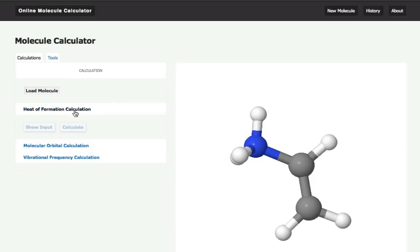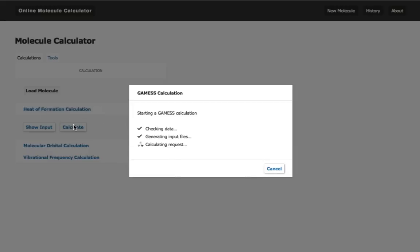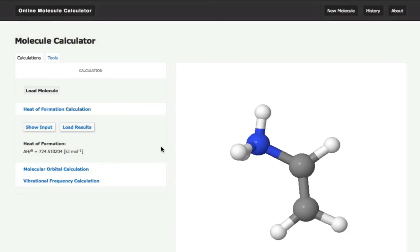For example, I can calculate the heat of formation. That's done, and you can see I have the heat of formation here in kilocalories per mole. I can also load results for this particular property, which brings the result into the window here.